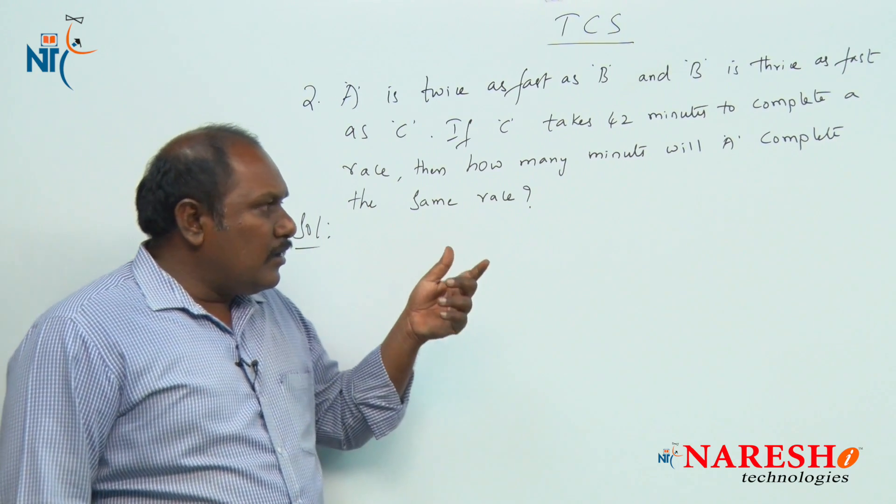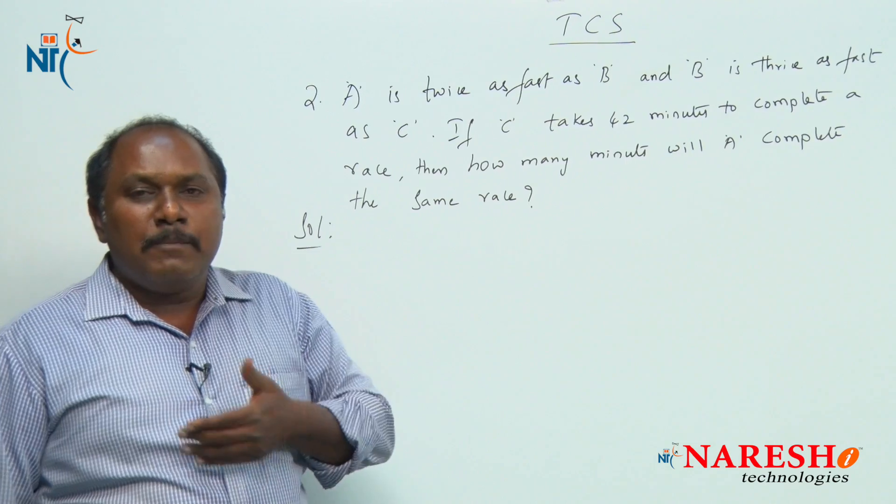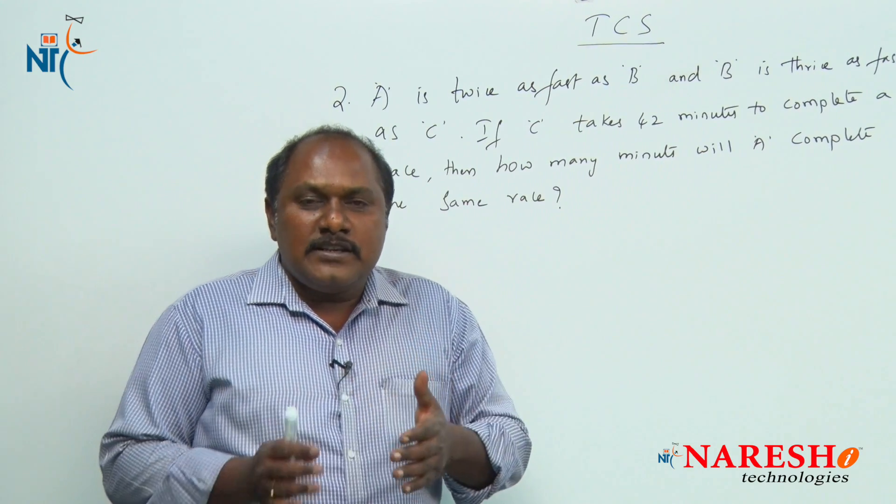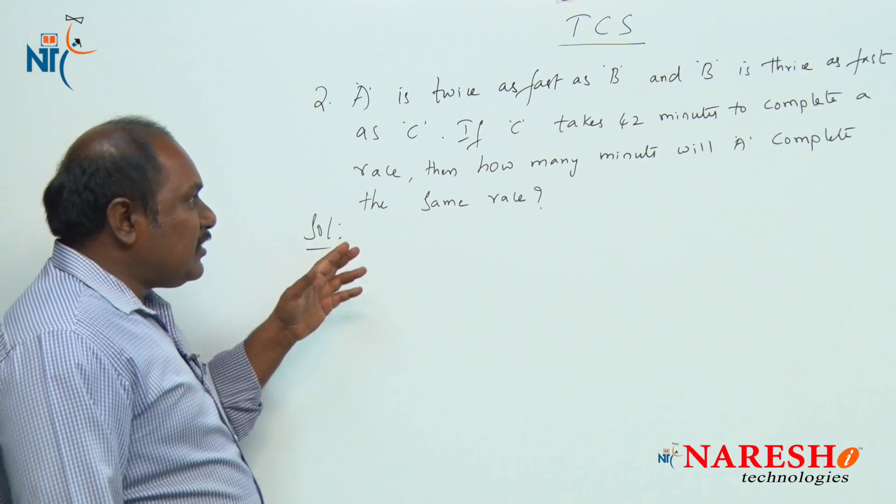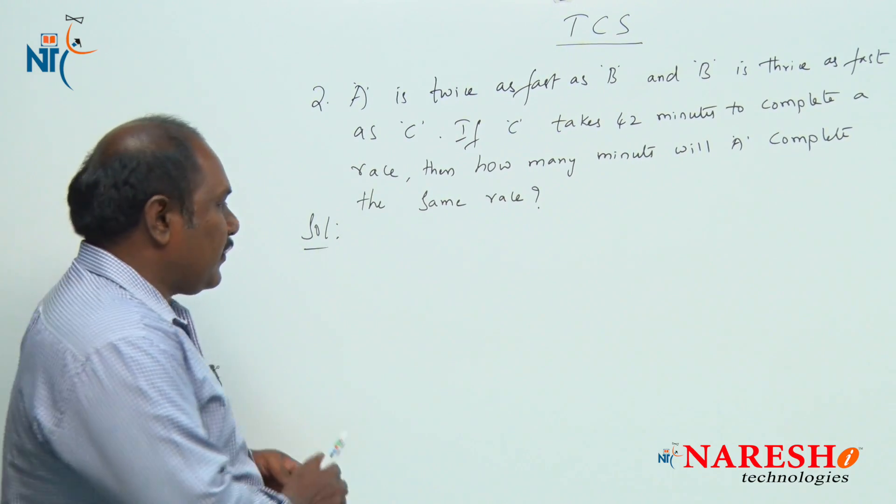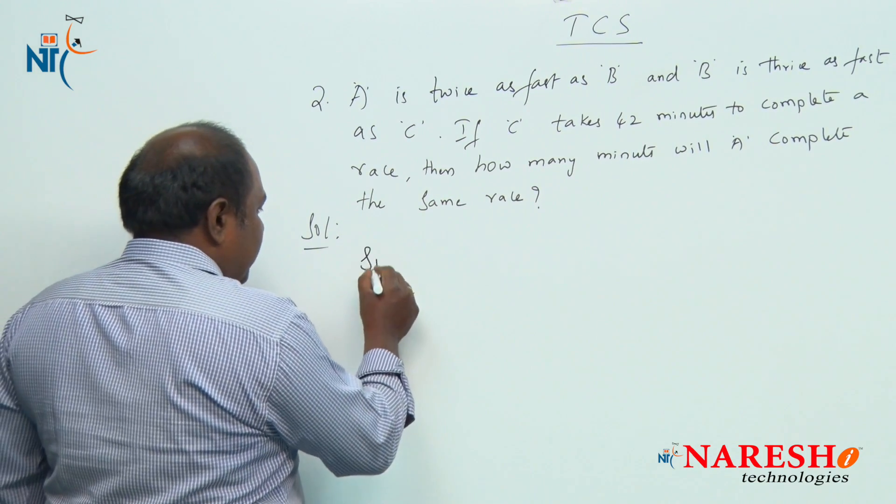We know that to run a race, to complete a race, the distance is constant for all the 3 participants A, B, C. We are given the relation between the speeds. So let us talk about the speeds.